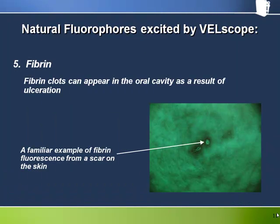Fibrin is a fibrous protein involved in the clotting of blood and can be seen in the oral cavity, for example as part of an ulceration. Fibrin is a relatively strong fluorophore, as can be seen here — this picture shows the fluorescent properties of fibrin in a scab on the skin, which looks characteristically red in white light. It's important to remember that ulcerations in the oral cavity, which are symptomatic of some type of abnormality, will often look brighter rather than darker through the Velscope. It will therefore be important to view not just the ulcerated part of the lesion but also the surrounding tissue, since fibrin has the potential to mask an underlying loss of fluorescence.